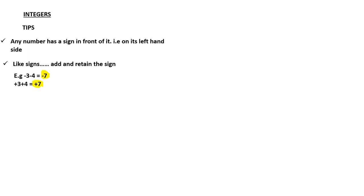Tip number two: when we are carrying out operations — that is either addition or subtraction of integers — like signs are always added. We say 'like signs add' and you retain the sign of the number. If they have a positive sign, the positive sign is retained; if negative, the negative sign is retained. For example, negative three minus four gives you negative seven. Also, positive three plus four gives you positive seven.